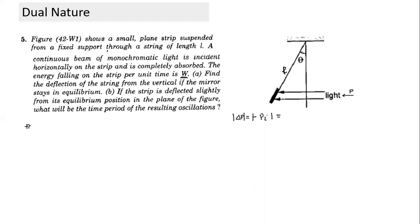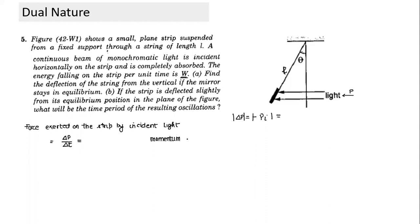What is the force exerted on the strip by the incident light? Force equals rate of change of momentum, so F = ΔP/Δt. What is momentum in terms of light? Momentum is h/λ. If we multiply by C we get energy of incident light divided by C. So momentum equals energy divided by C.